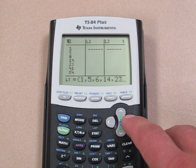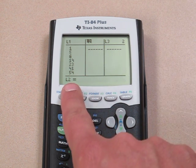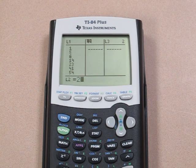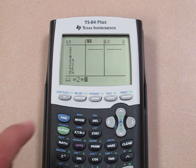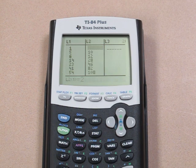If we push up and then over to get over to list 2, we see it says L2 equals. Well, we want list 2 to be 2 times, and I'll push 2ND and 1. We want list 2 to be 2 times what list 1 is. Pressing ENTER, it will automatically make list 2 double what list 1 was.